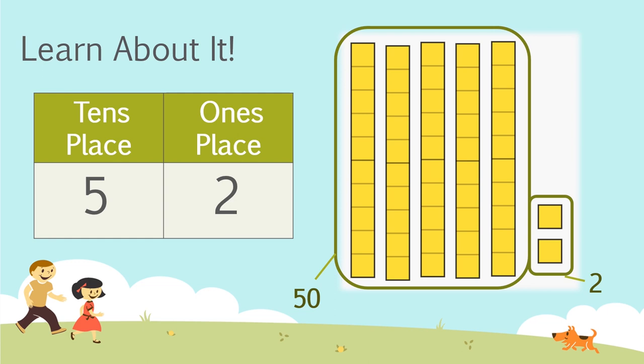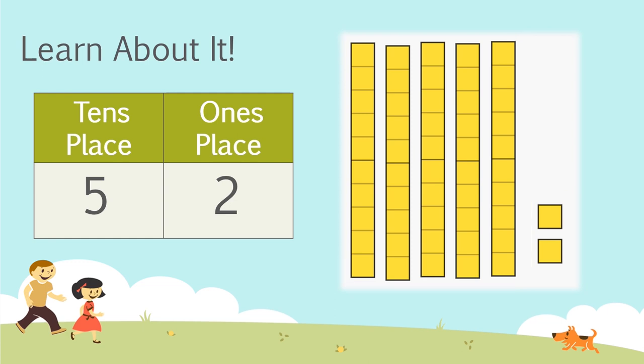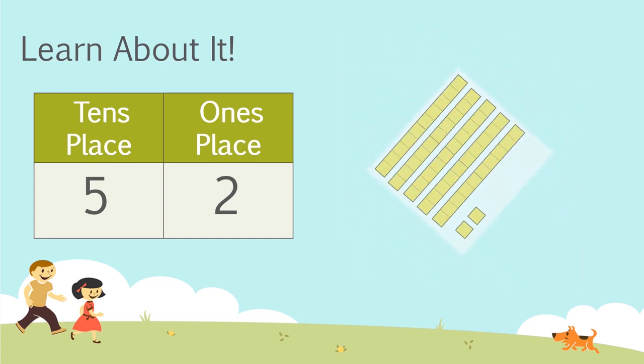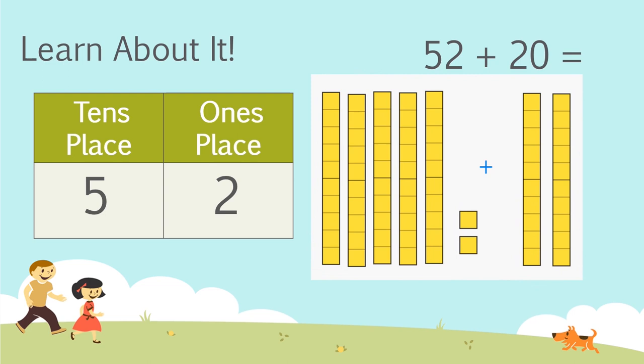So now that we have 52, we can use our understanding of place value to add or subtract groups of ten. Let's take a look at how we can use this in addition. What if we had 52 plus 20? We can see that we are adding two groups of ten. Does this change anything about our ones place? No, it doesn't. So what is five tens plus two tens? That's right, seven tens. And then we can add the two that we already had.